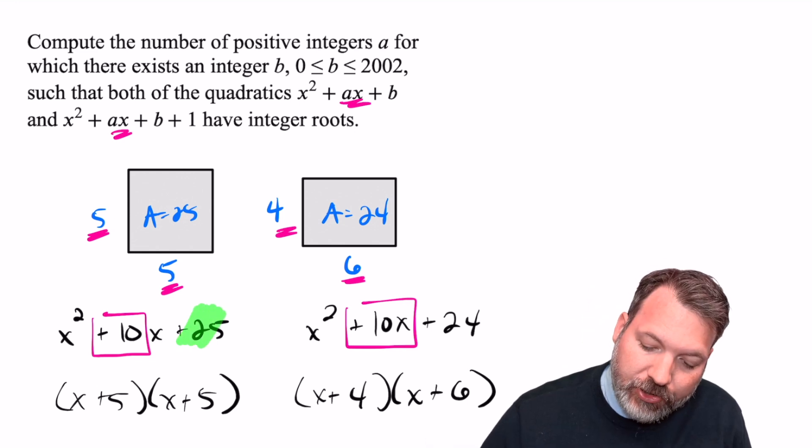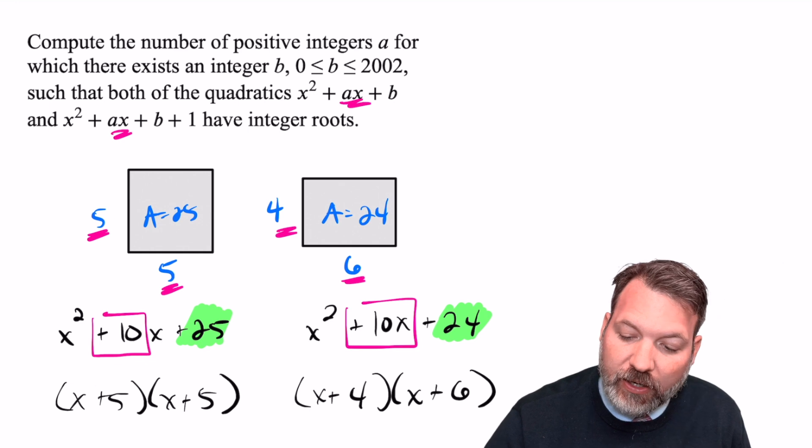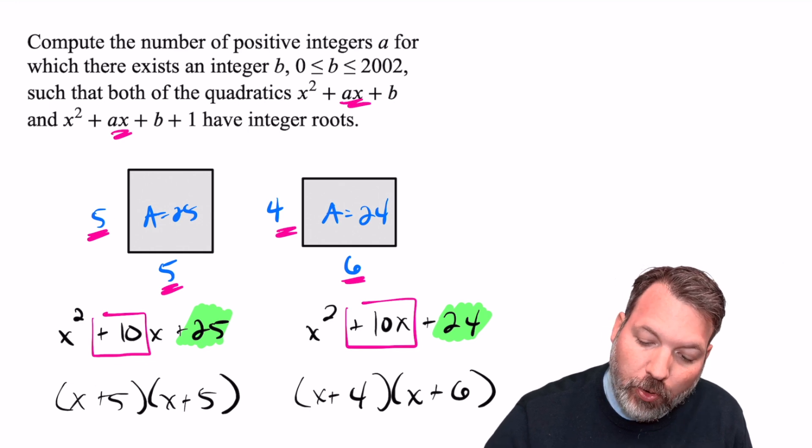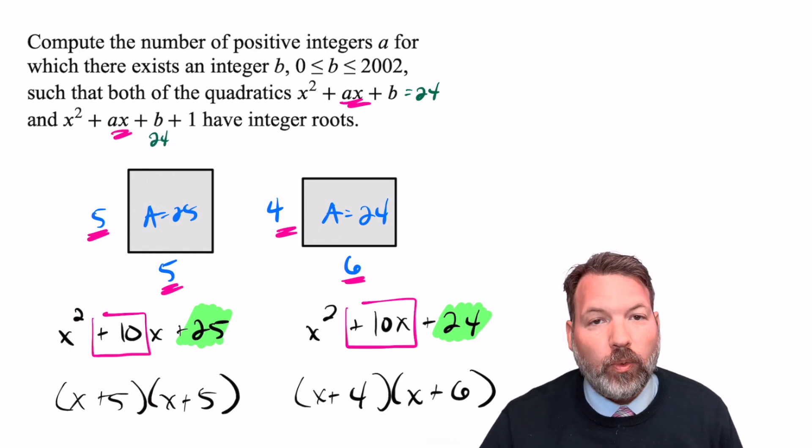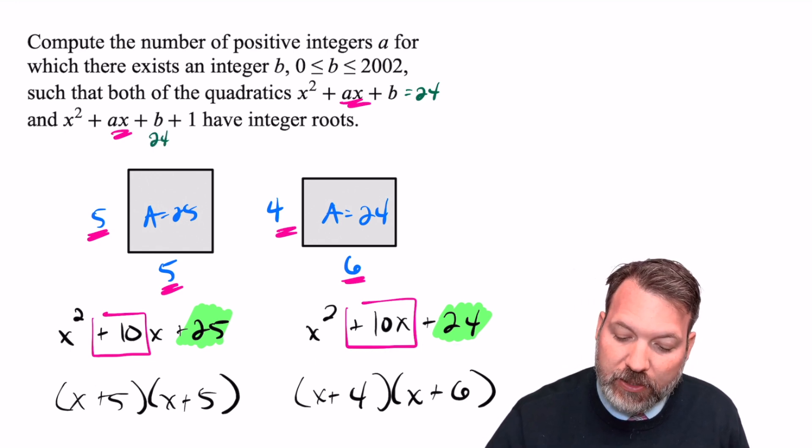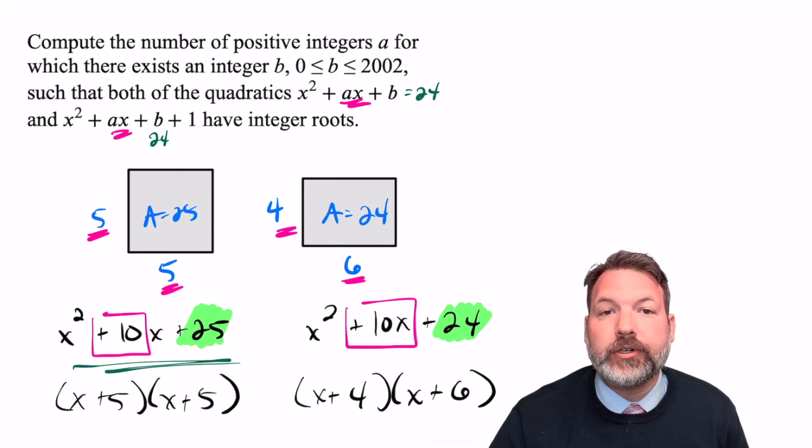But our constant terms are one apart, in one case 25 and in another case 24. This would correspond, for example, to a b equals 24, in which case we get one trinomial x² + 10x + 24, and then the other trinomial one larger x² + 10x + 25.